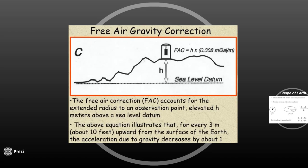What does this certain value mean? As we go above from the sea level datum, we are changing the gravity attraction by 0.308 mG. Therefore, we have to multiply it by the height.